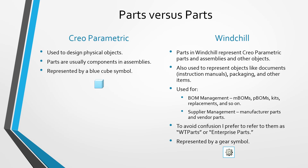Because it can be confusing talking about parts created in Creo Parametric versus parts from Windchill, I prefer to call the Windchill parts WT parts — I believe WT stands for Windchill type — or call them enterprise parts. In Windchill, the parts are represented by a gear symbol, and the color of the gear can mean different things. For example, a gray gear is something that comes over from Creo Parametric, but the manufacturer Windchill parts and vendor parts will be different colors.